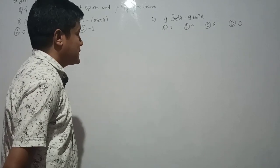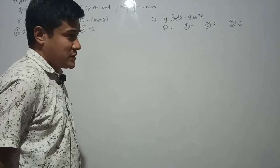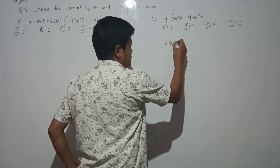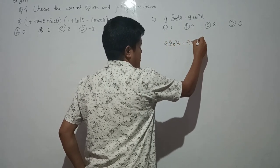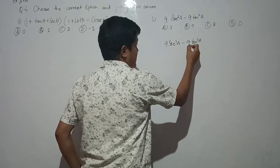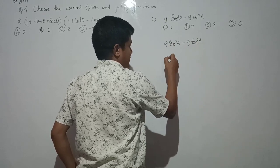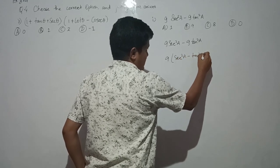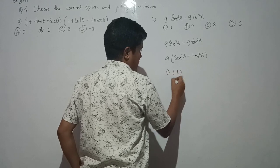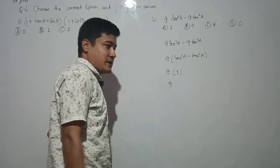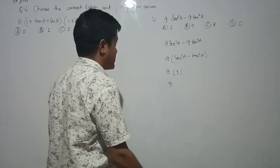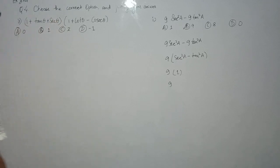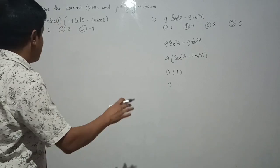Question number 1: 9sec²a minus 9tan²a. If we take out 9 as common, we get 9(sec²a minus tan²a). Since sec²a minus tan²a equals 1 by the trigonometric identity, the answer is 9 times 1 equals 9. So option B is correct.